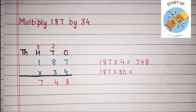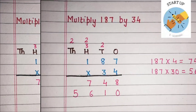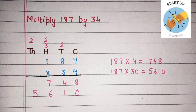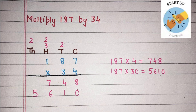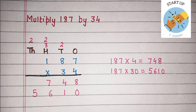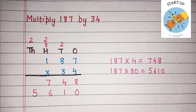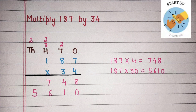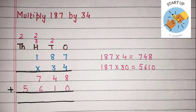Now we will multiply 187 by 30. Because we are multiplying 187 by the 10's place digit, so at 1's place we are going to write a 0. 3 × 7 = 21. 1 will be written under 10's place and 2 will be carried on 100's. Now 3 will be multiplied by 8: 3 × 8 = 24, plus 2 which were carried, is equal to 26. 6 will be written under 100's place and 2 will be carried on 1000's. 3 × 1 = 3, plus 2 which were carried, is equal to 5. So 5 we are going to write under 1000's place.